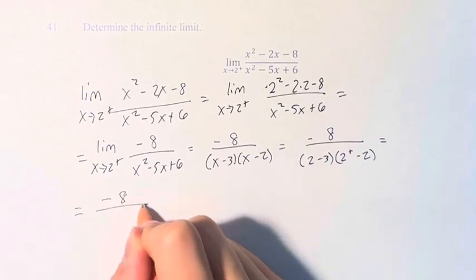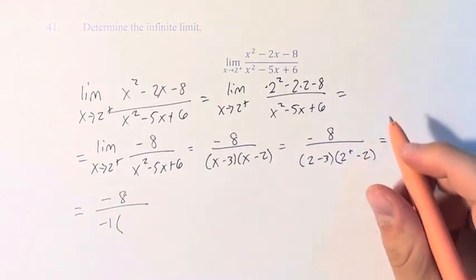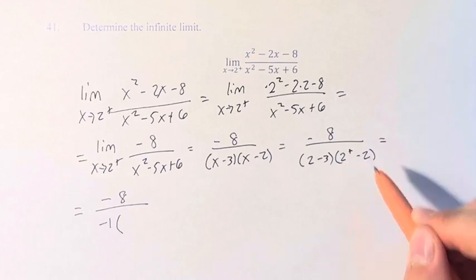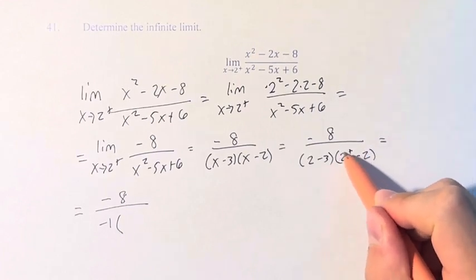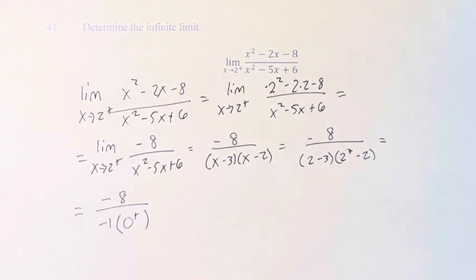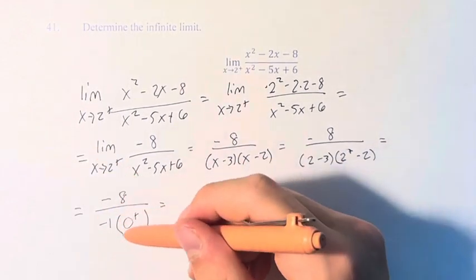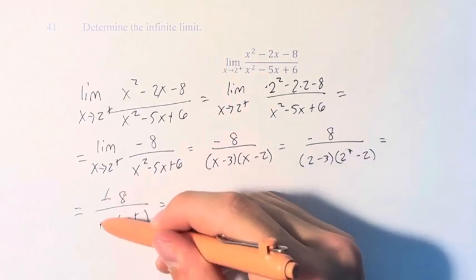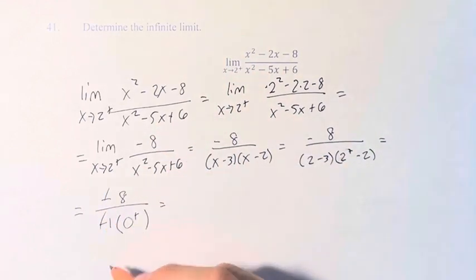So this is negative 8 over negative 1 times 2 from the right minus 2 is 0, except these numbers are very, very slightly greater than 0, so we're approaching 0 from the right. Approaching 0 from the right, and then these negative signs cancel.